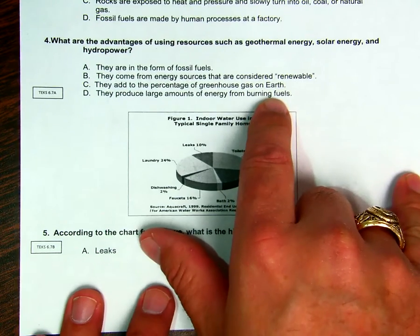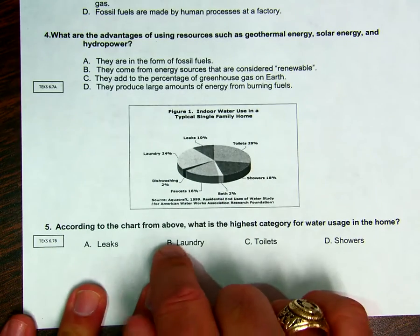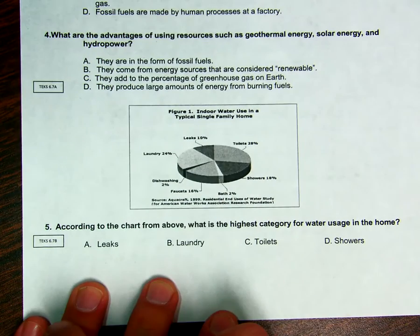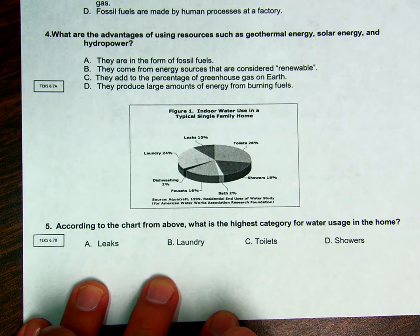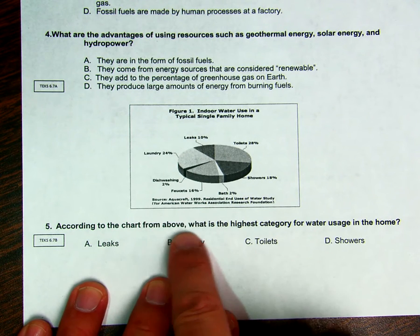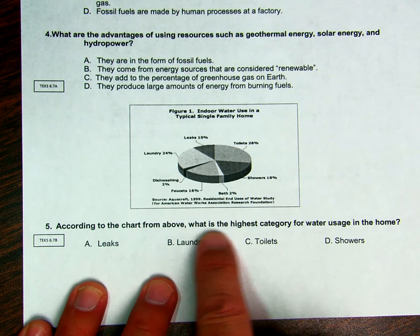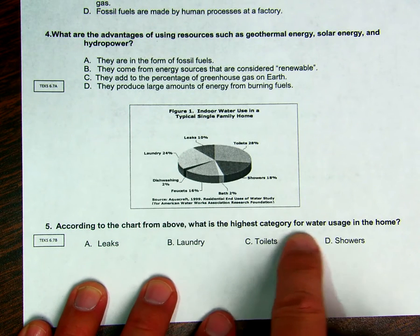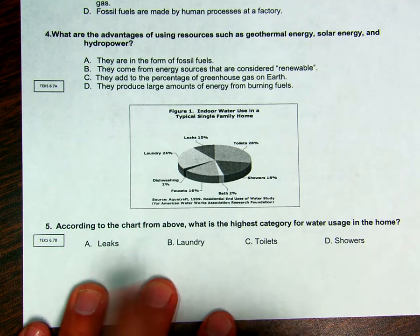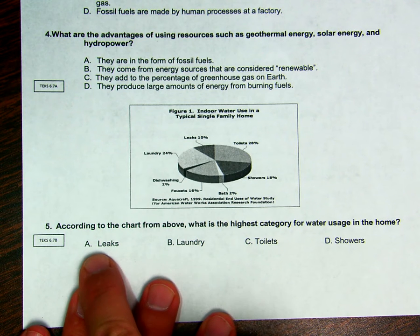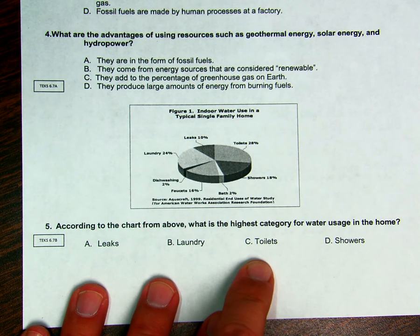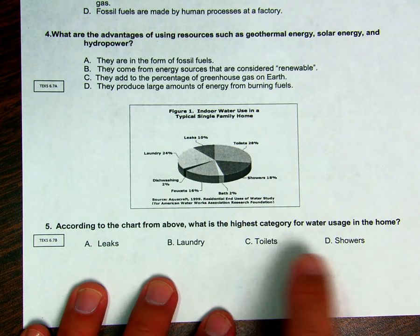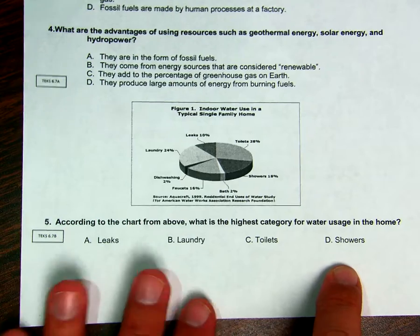Number five is a question that's going to test your skill set to read a graph, specifically a pie chart. So according to the chart from above, what is the highest category for water usage in the home? Is it A, leaks? B, laundry? C, toilets? Or D, showers?